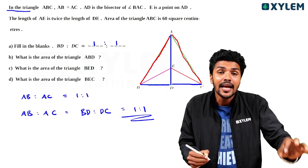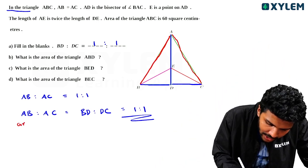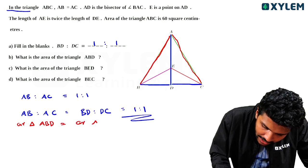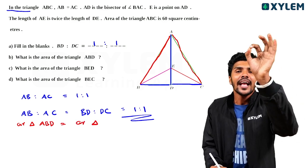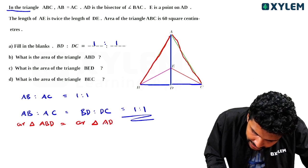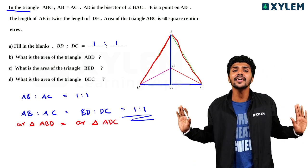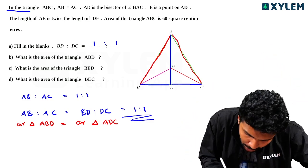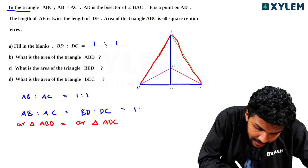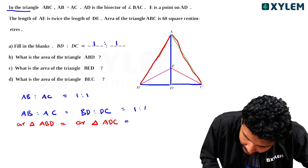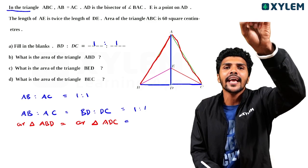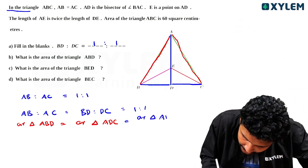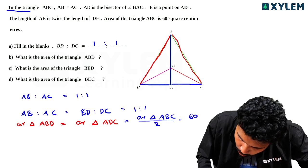These two triangles are equal: Area of triangle ABD is equal to area of triangle ACD. What is equal? Area of triangle ABC divided by 2.